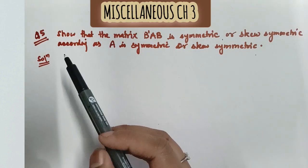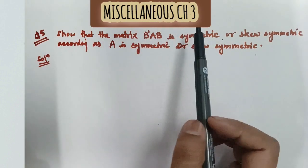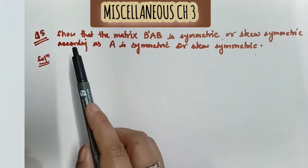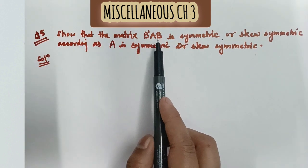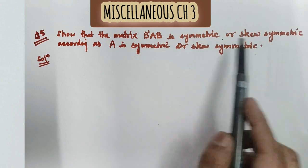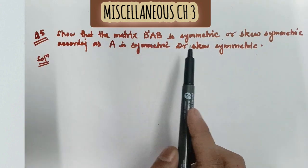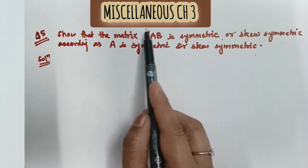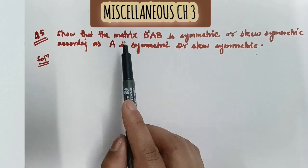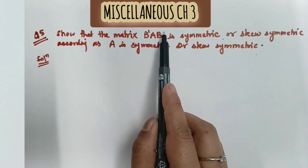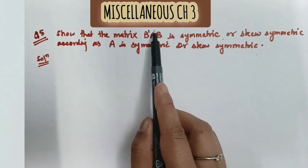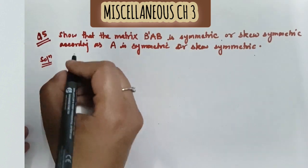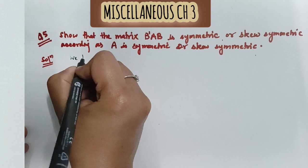Dear students, here we will see the most important question of Miscellaneous Chapter 3 from Class 12 — that is Question Number 5. The question is: show that the matrix B'AB is symmetric or skew-symmetric according as A is symmetric or skew-symmetric. That means if A is symmetric, show B'AB is symmetric; if A is skew-symmetric, show B'AB is skew-symmetric.